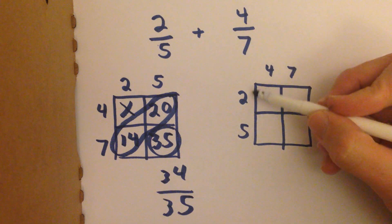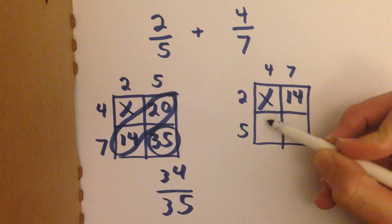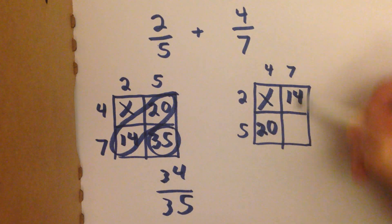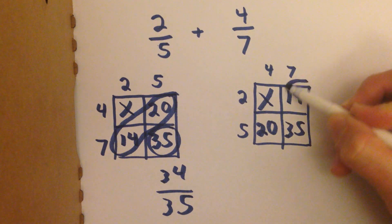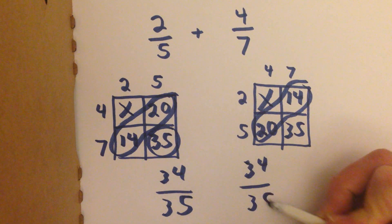Now, we can do it the other way as well, 2 fifths and 4 sevenths. Cross out, 2 times 7, 4 times 5, 5 times 7. We add along the diagonal, 34 over 35.